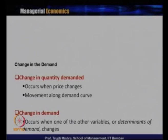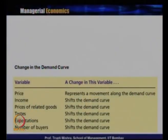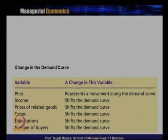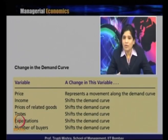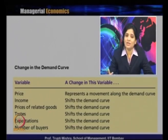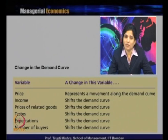There is a basic difference between the two causes of demand change. First, if the change is due to price, it is represented as a movement along the demand curve from one point to another. Second, if the change is due to non-price determinants — like price of related goods, consumer income, taste and preference, expected future price, or number of buyers — the demand curve itself shifts: to the right for an increase, and to the left for a decrease.